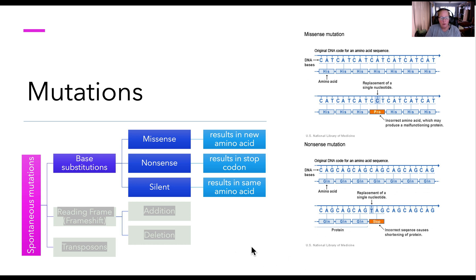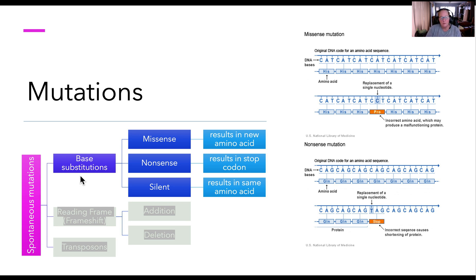Now let's talk about mutations. There are different types of mutations. The first type of spontaneous mutations are what we call base substitutions. Base substitutions result in three types of mutations: a missense, a nonsense, and a silent.